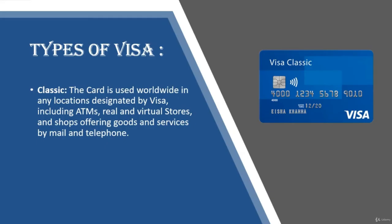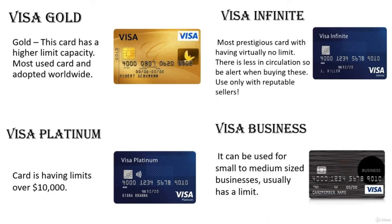Types of Visa card: Classic — used worldwide for ATM, virtual store, buying goods and services, easily available. Visa Gold — high capacity, used worldwide. Visa Platinum — has a limit of $10,000. Visa Infinite — the most precious card with virtually no limit; less in circulation, so be alert when buying this type.